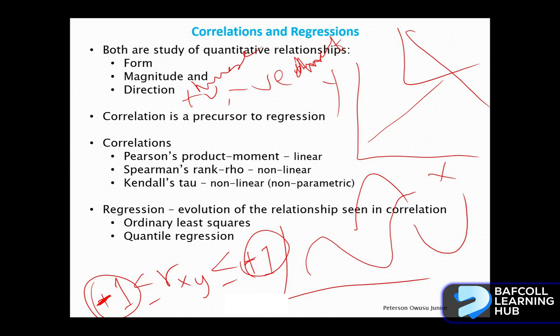We also refer to direction as inverse or direct. This happens in many fields where relationships are in the same direction or in opposite directions. When you have a correlation value, it can tell you about both the magnitude and the direction. The form will not be clear to you, but if you use a method of calculation based on a linear or non-linear relationship, or if you plot the relationship, you can tell. The correlations we are looking at here are mainly bivariate — the relationship between two variables, X and Y, at a time. You can have many variables but look at them in pairs.